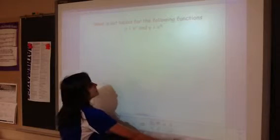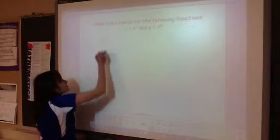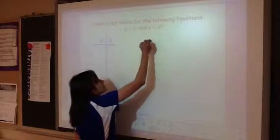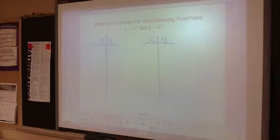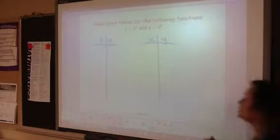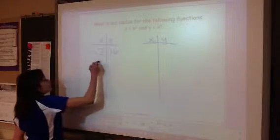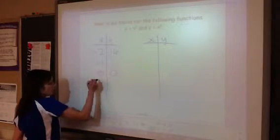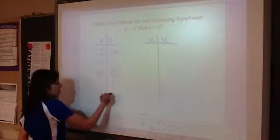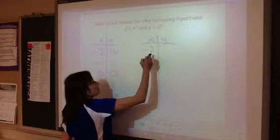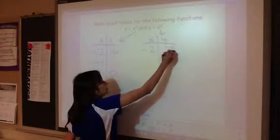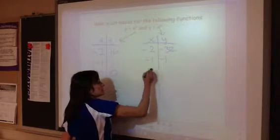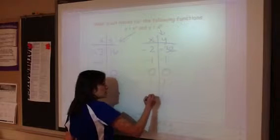We want to make in/out tables for x⁴ and x⁵ because we're doing transformations — these need to be in your notes or you will not get credit. For x⁴: (−2)⁴ = 16, (−1)⁴ = 1, 0⁴ = 0, 1⁴ = 1, 2⁴ = 16. For x⁵: (−2)⁵ = −32, (−1)⁵ = −1, 0⁵ = 0, 1⁵ = 1, 2⁵ = 32.